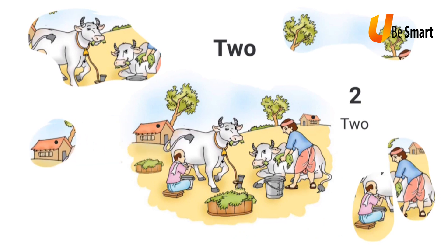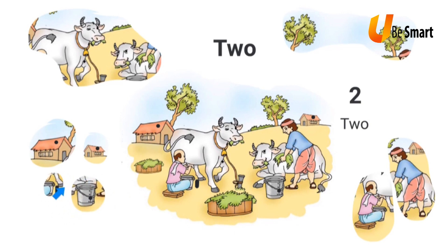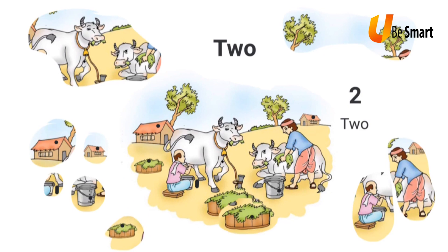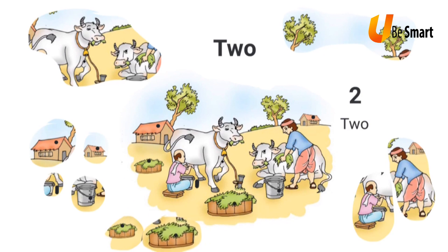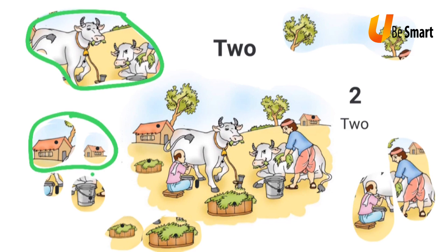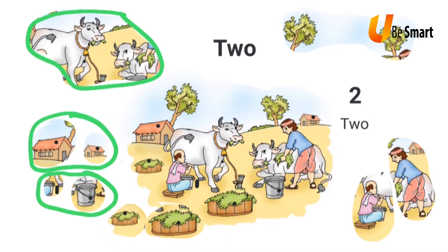I also see one house and two houses. Now I see two buckets — one bucket and two buckets. I also see two patches of grass — one patch and two patches. So I see two cows, two houses, two buckets, and two patches of grass.